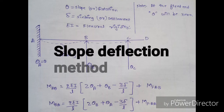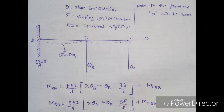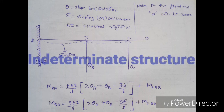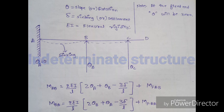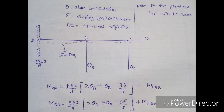Welcome, dear friends. Today we will be discussing all about the slope deflection method. The slope deflection method is one of the methods of analysis of indeterminate structures. There are various methods of analysis of indeterminate structures, like the Kani's method and others, but in this particular video we will be discussing all about the slope deflection method. So let's get started.